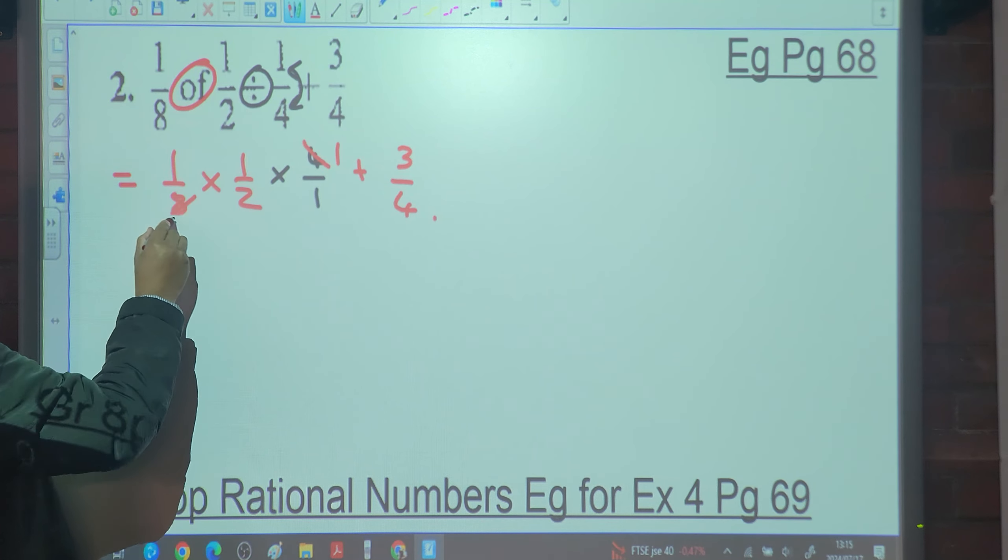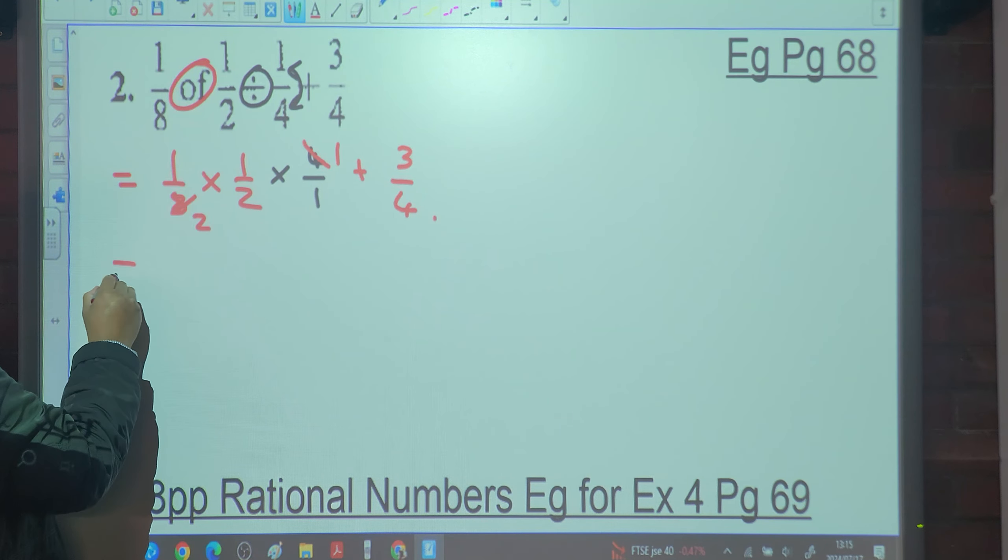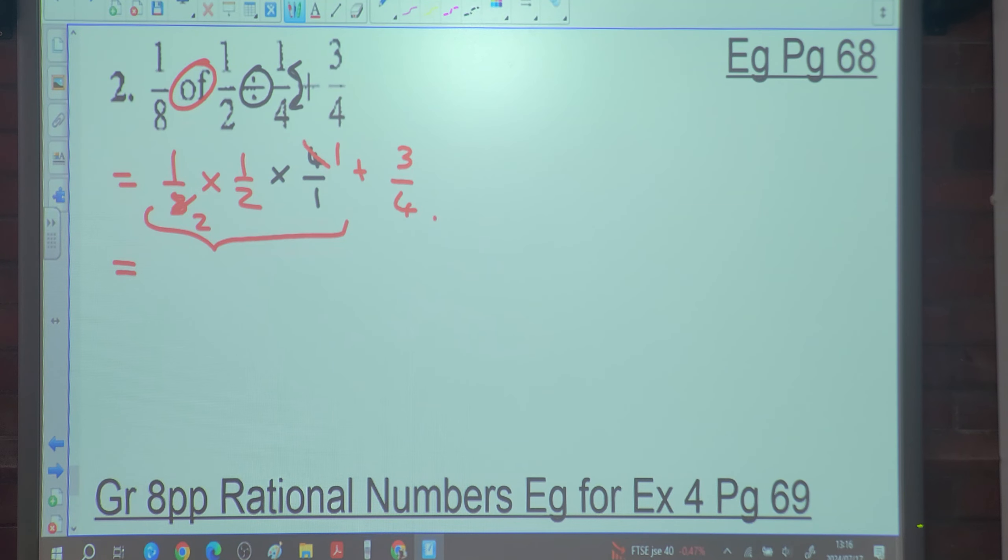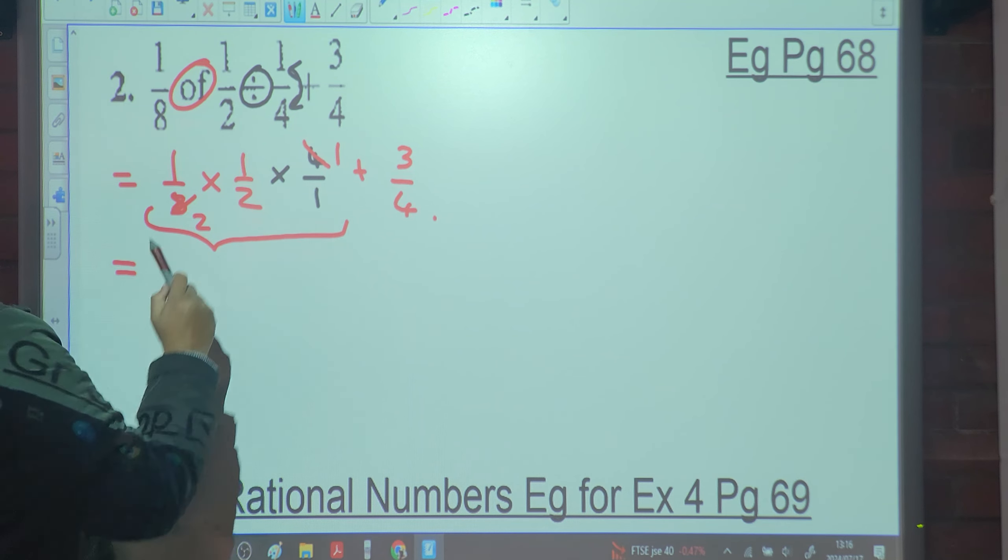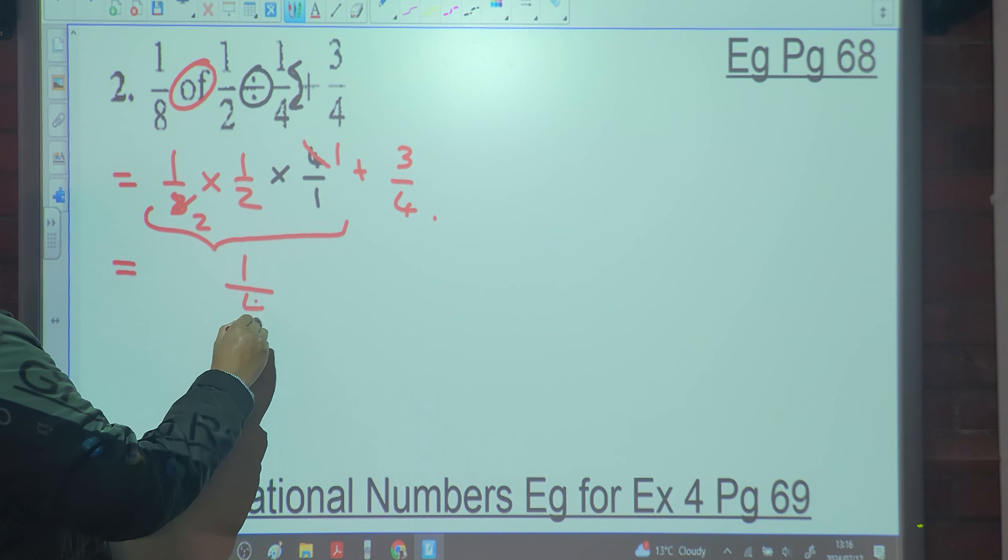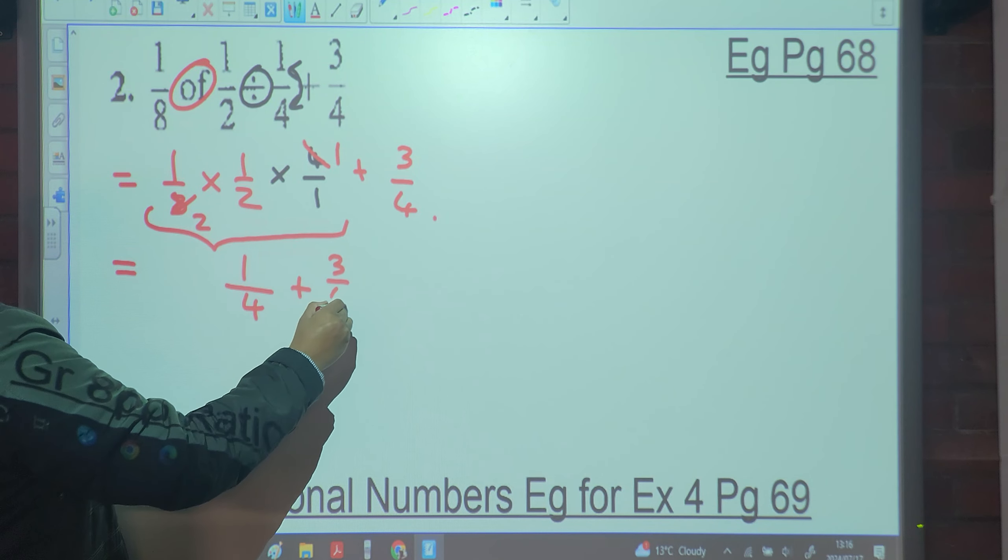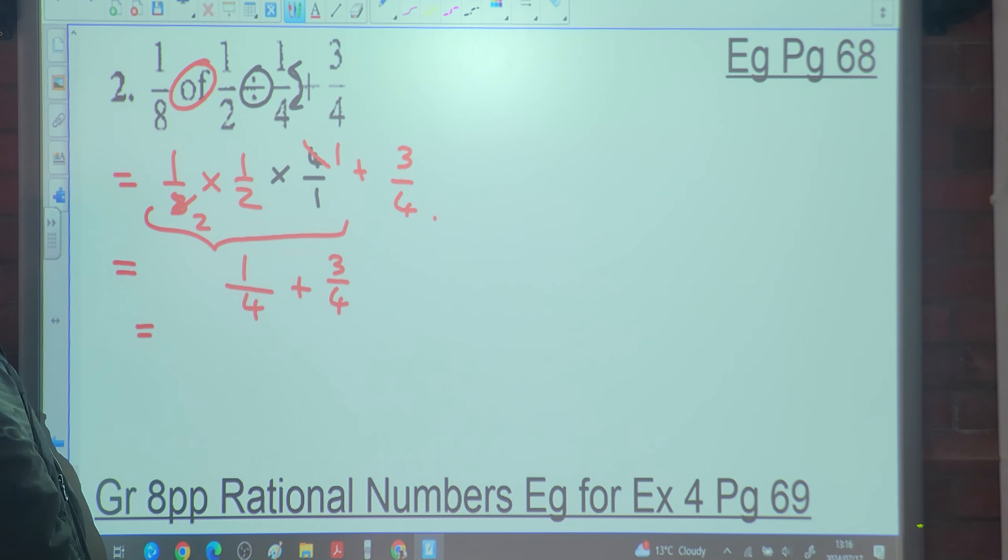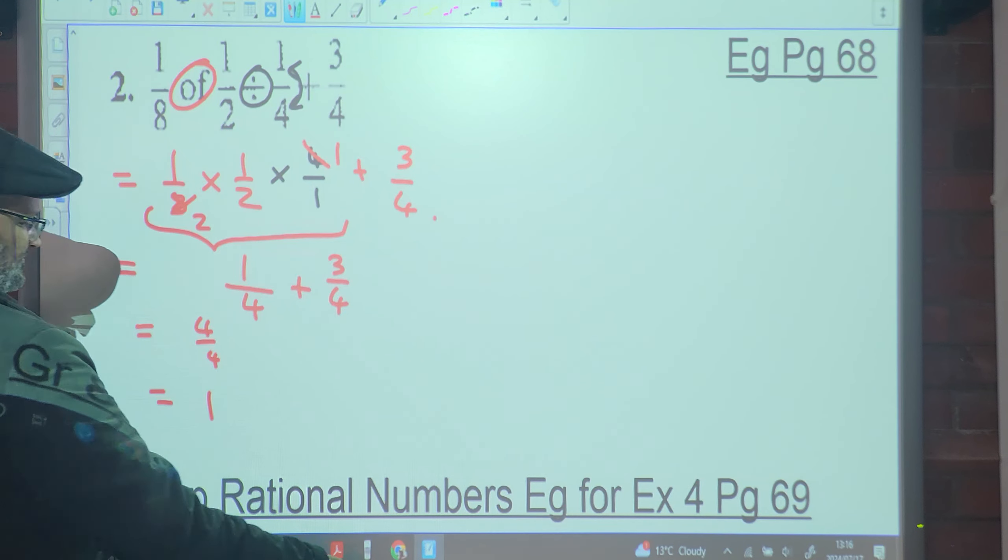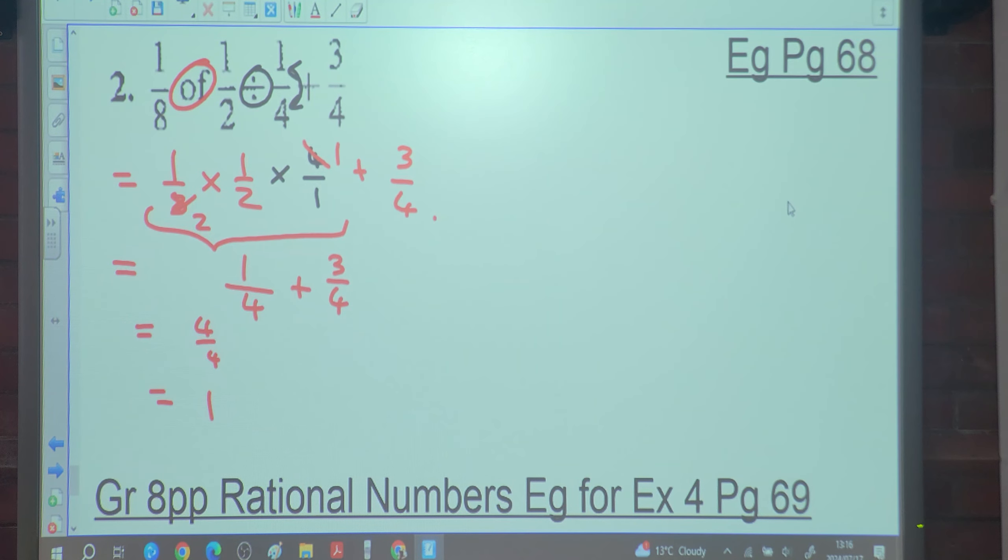So I can do this first. That's going to be one over sixteen. Multiplied by four over one, which is the same as straight multiplication. So four goes into four once, four goes into sixteen four times. But I need to do this part first. What's one multiplied by one multiplied by one? One. Two multiplied by two multiplied by one? Four. Plus three quarters.